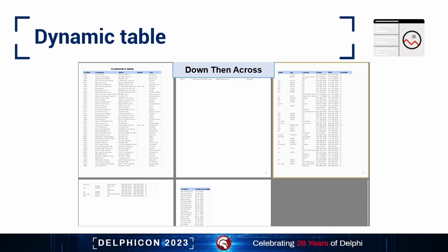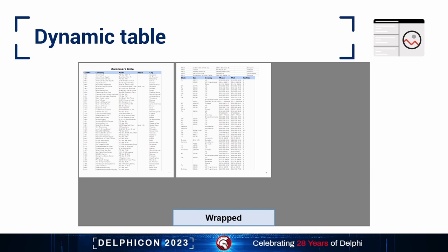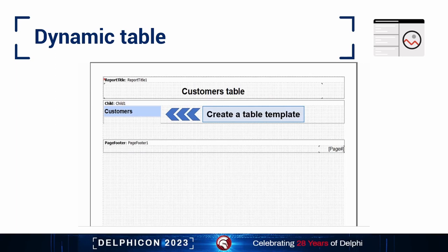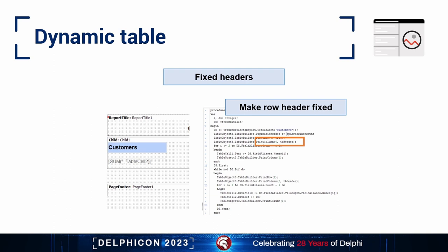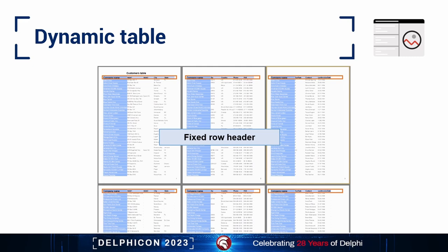With the 'down then across' mode, the table will look different. The table builder supports fixed rows and columns which get printed with every new part of the table. Here's the piece of code that fixes the header, and here's an example of a table with fixed headers which will repeat on break.